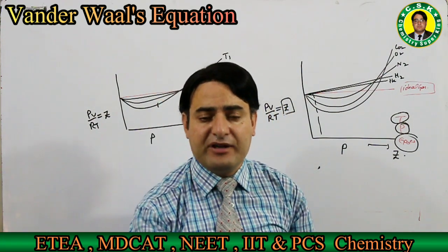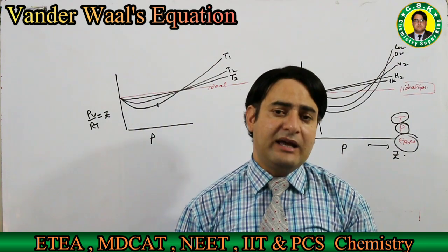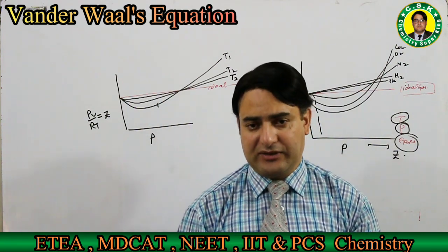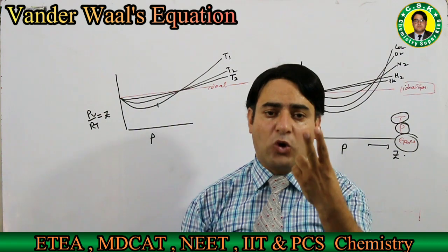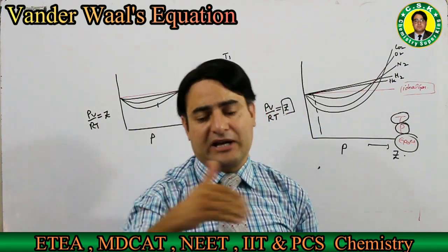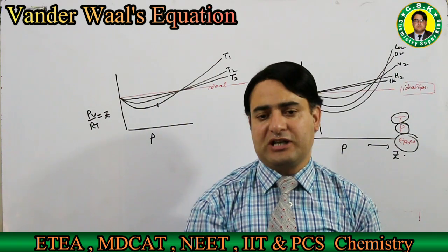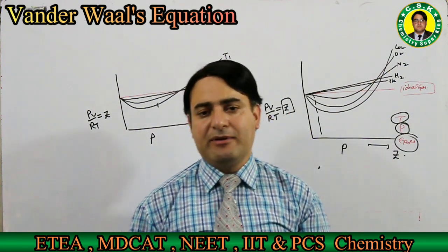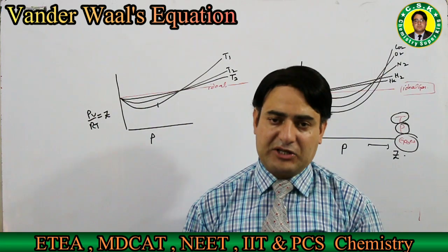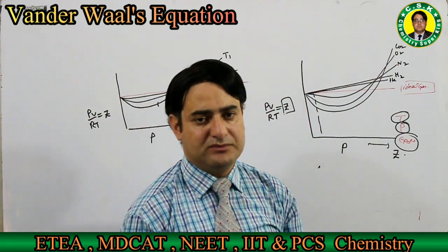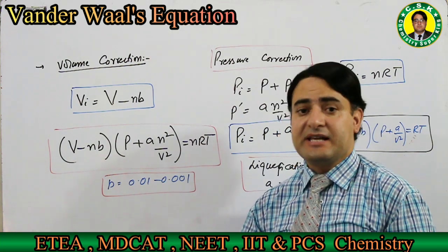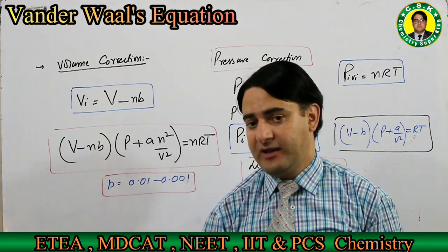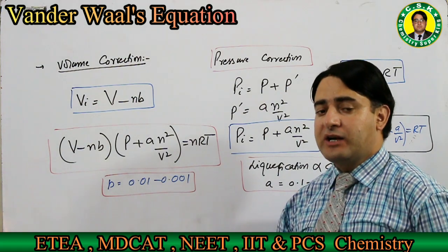Due to these two faulty postulates, gases do not show ideal behavior. So van der Waals in 1879 derived an equation — called the van der Waals equation — in which he made two corrections: one is called volume correction and the other is called pressure correction. Since we are in the ETA series, we will not derive the equation here; we will discuss it directly.